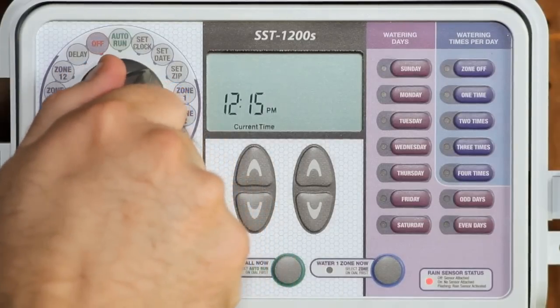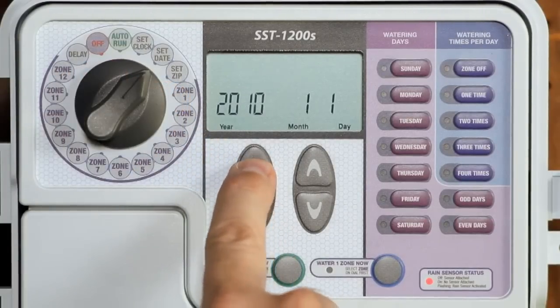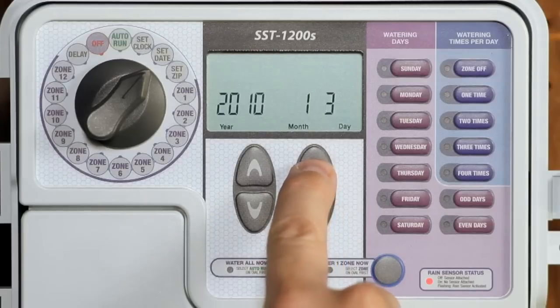Now turn the dial to the set date marking. Push the left up down arrow key to set the year and use the right key to set the date.